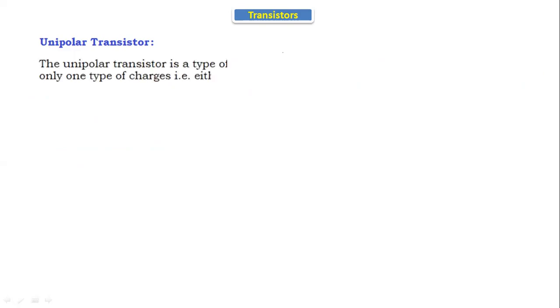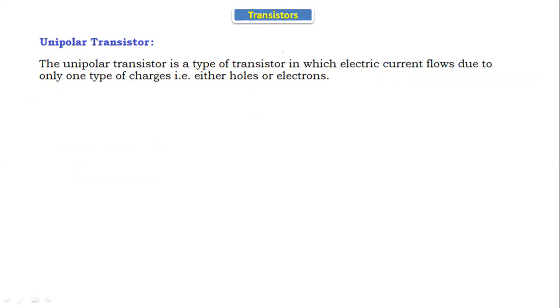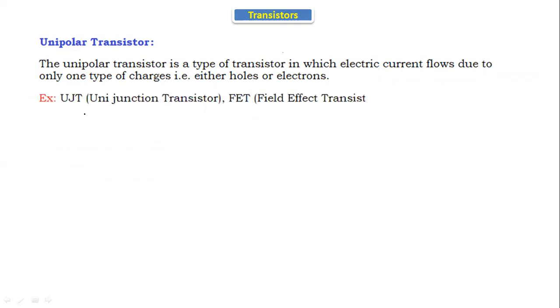There are two types of transistors: the first one is unipolar and the second one is bipolar. The unipolar transistor is a type of transistor in which the electric current flows due to only one type of charge carrier — that is, either holes or electrons. The examples of the unipolar transistor are UJT (unijunction transistor) and FET (field effect transistor).